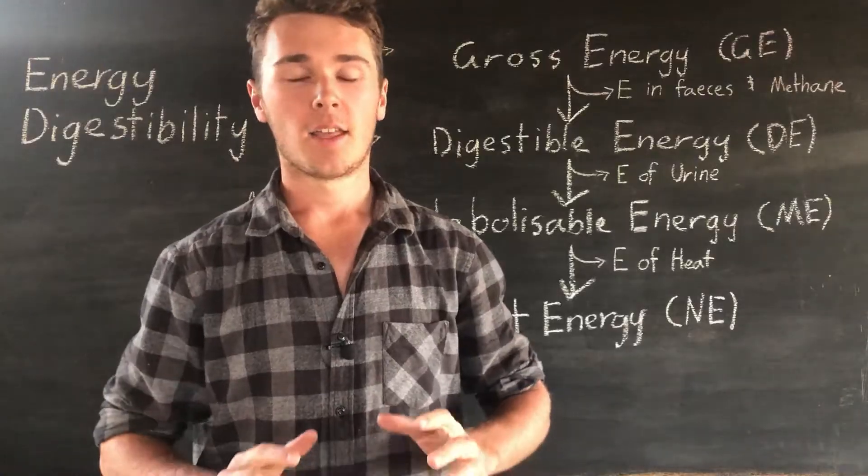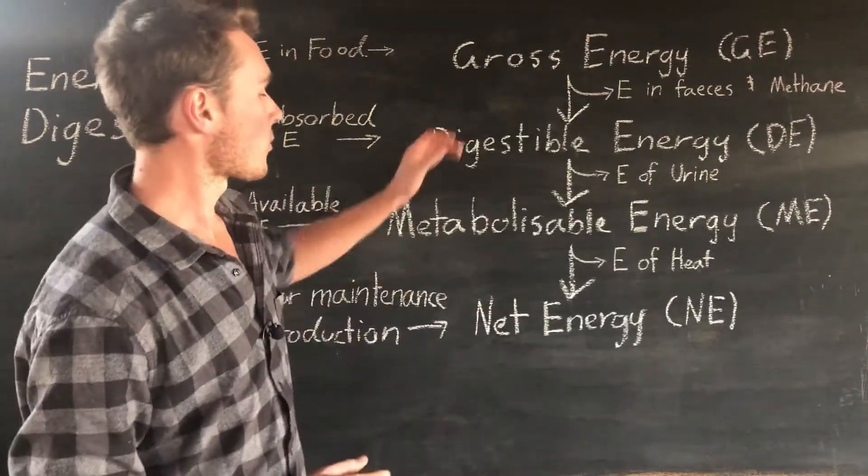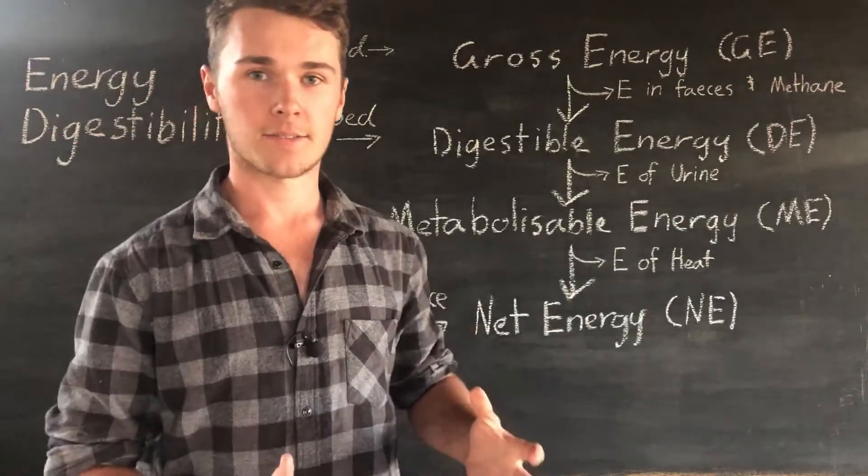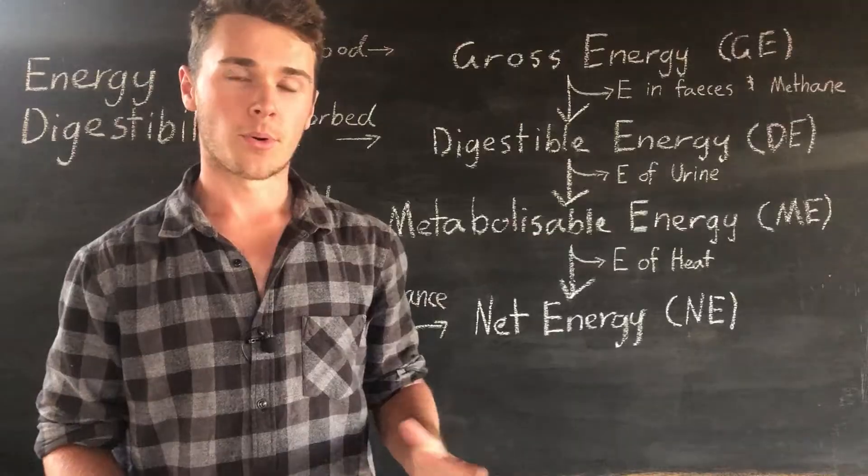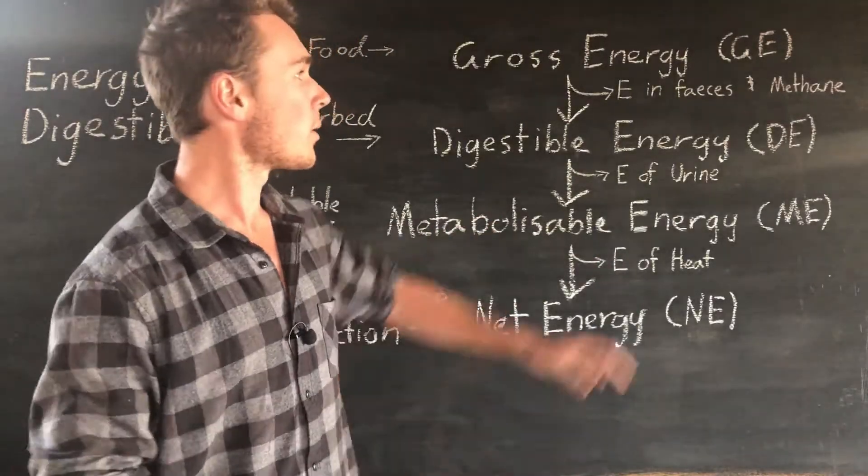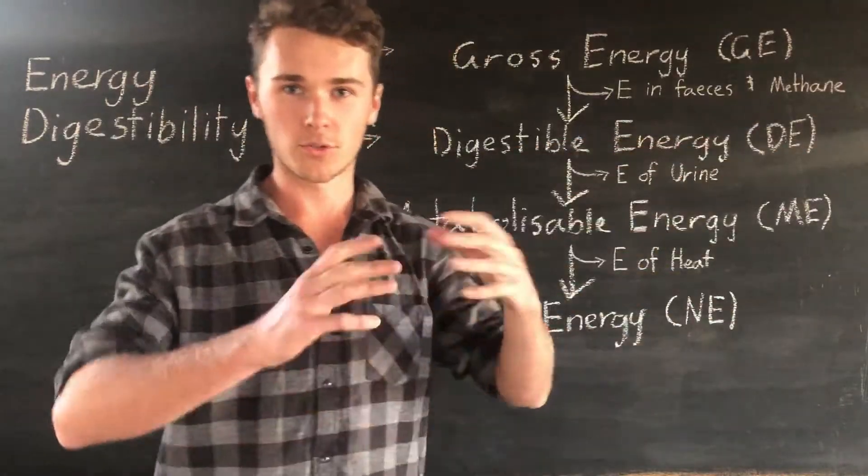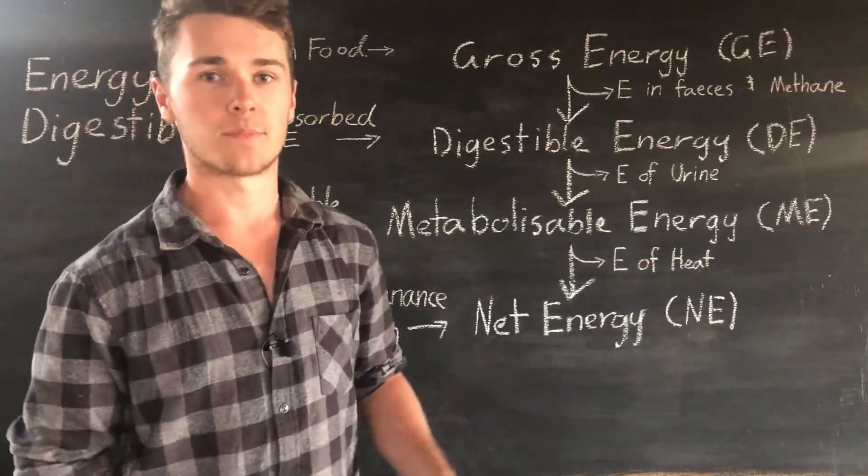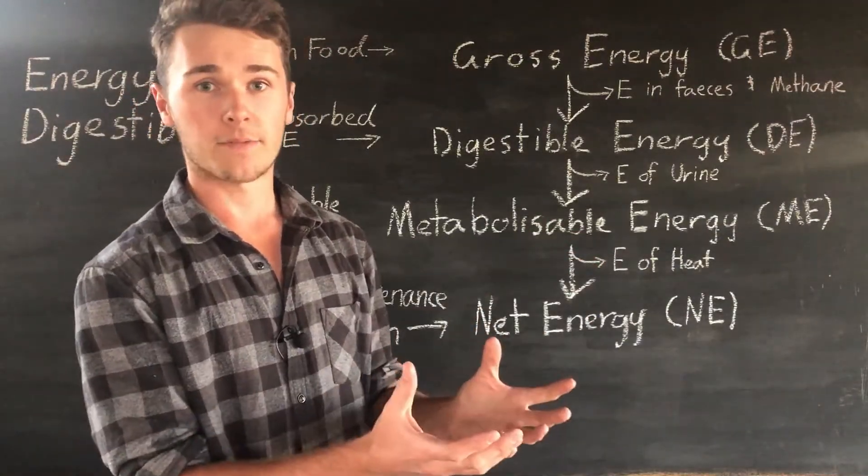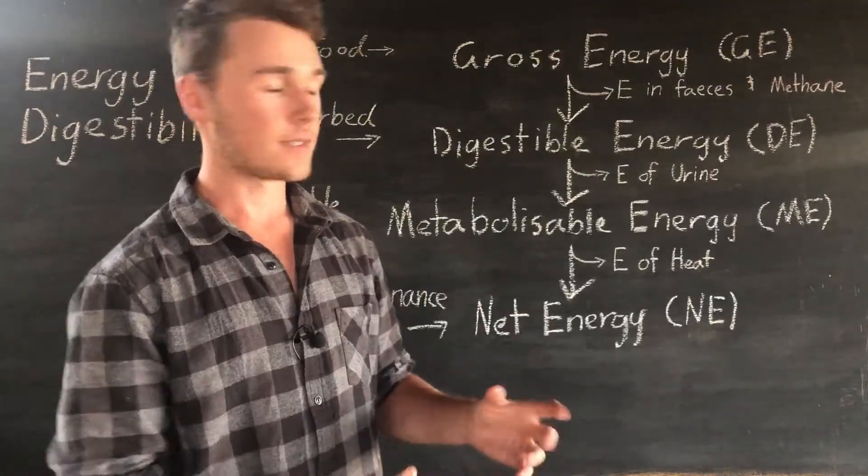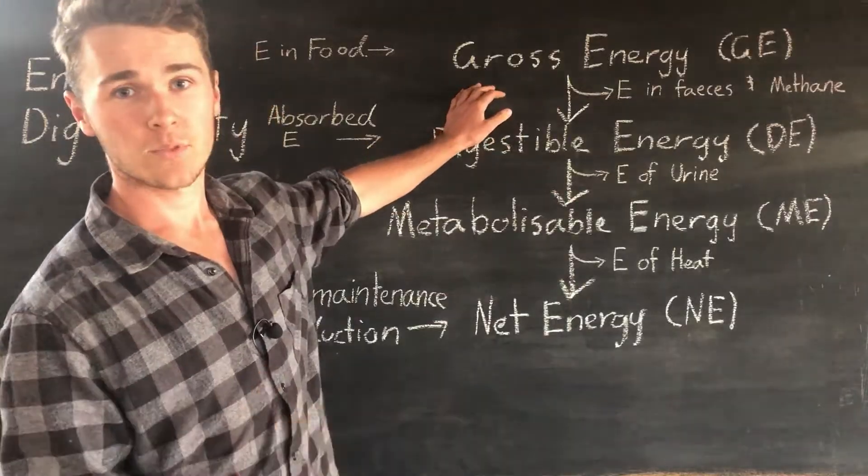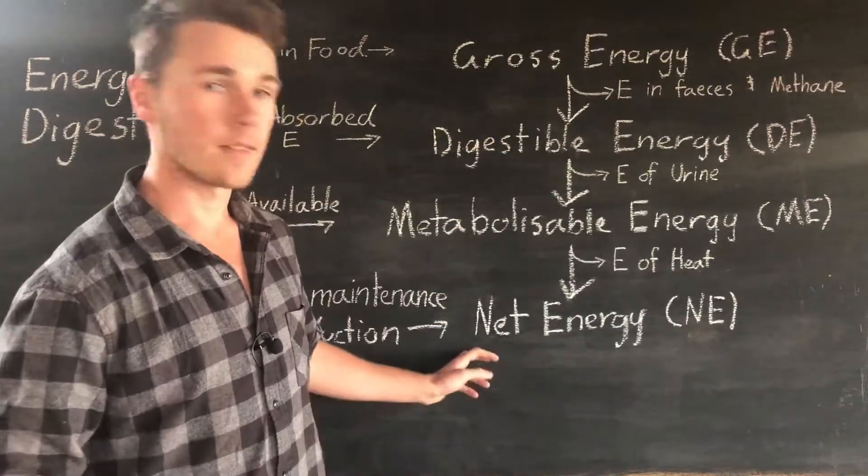So when I was studying this, I thought of a good way to remember the difference between gross and net energy. Imagine you have a net, right? And you put all this gross stuff in. So the gross stuff is going to include all the food matter, but it's also going to include your feces and your methane, right? It's all gross, it's pretty gross, you don't want to use it. But you put it into your net and all the gross stuff is going to go away, and the net stuff, everything in the net, is going to be almost the good stuff. So everything that is gross, it's going to be, say, gross energy, and everything that's in the net, net energy.